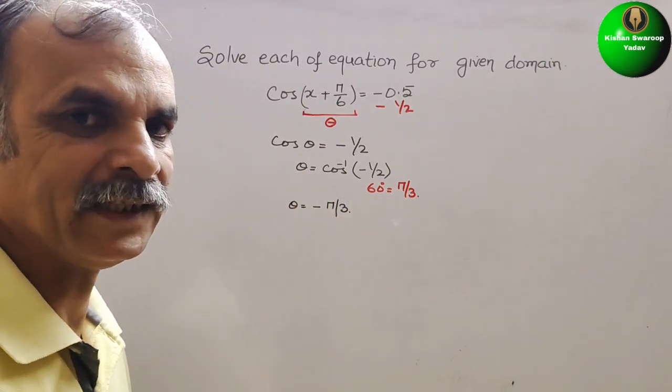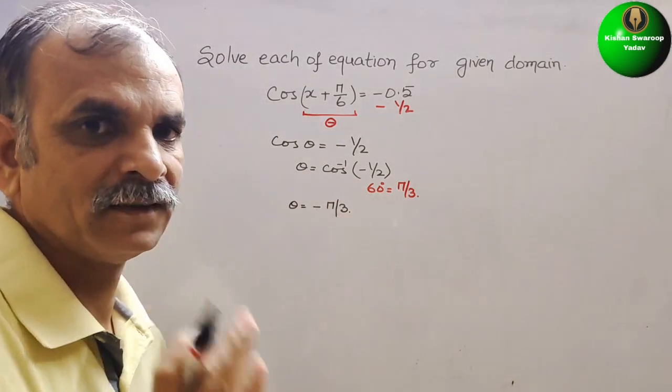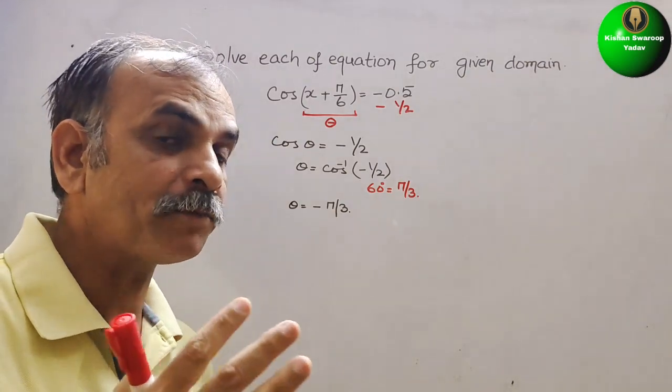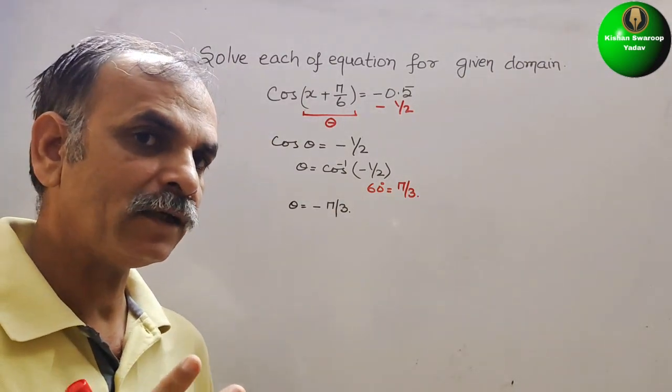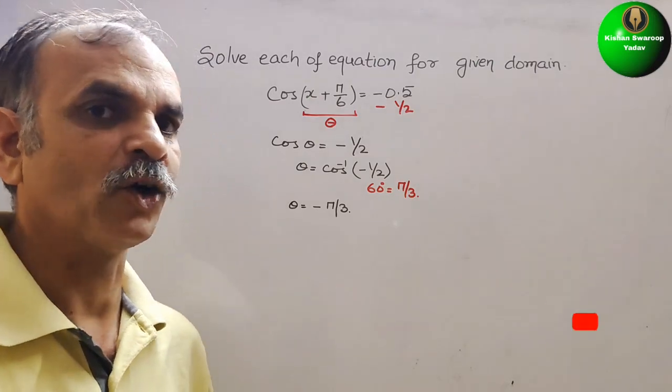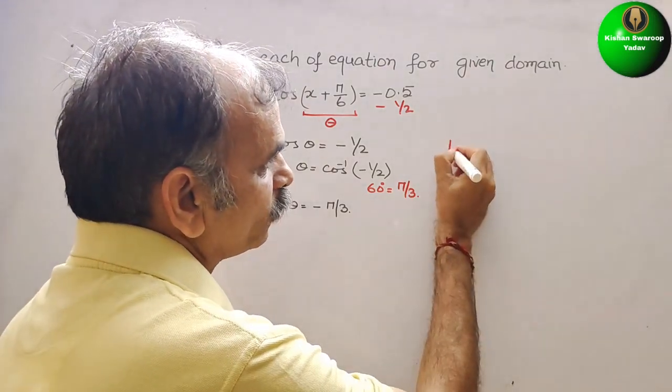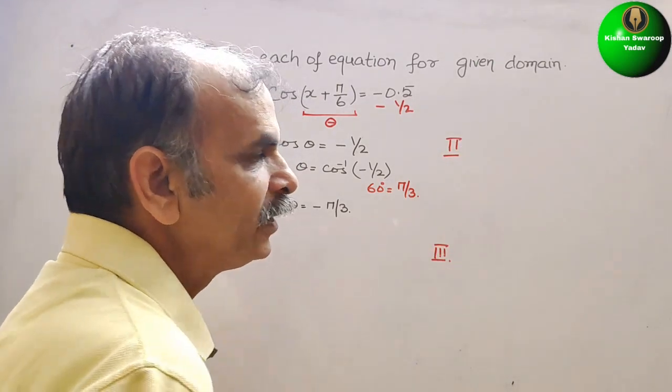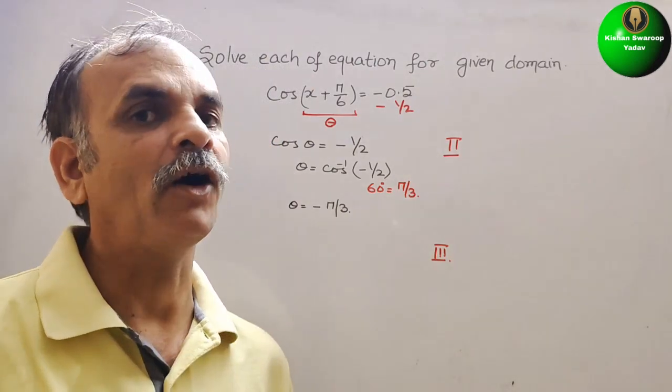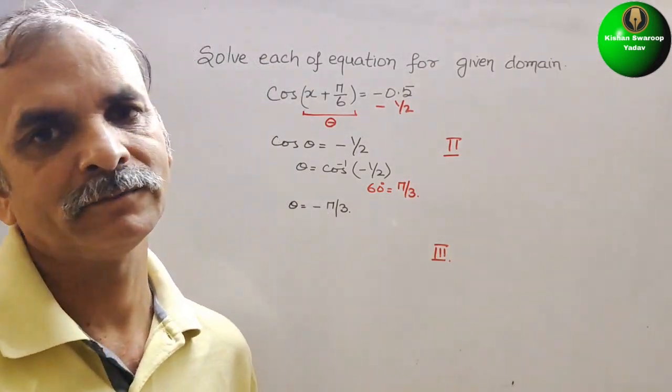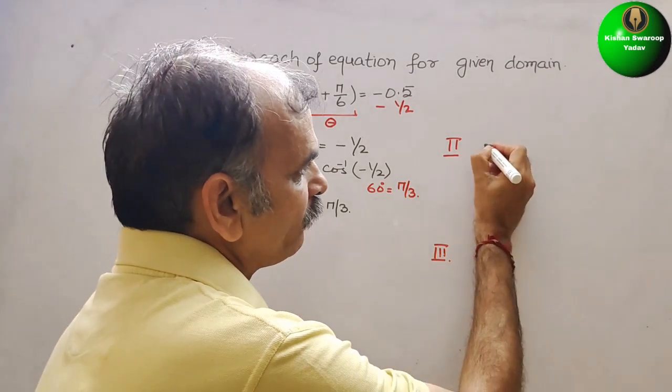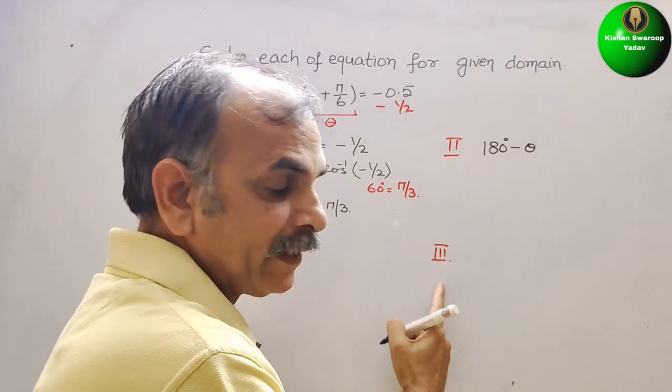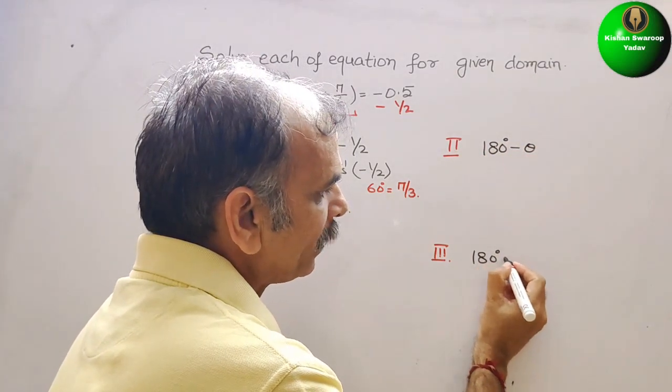Now understand this. Here minus is there. So minus means what? Cos is minus where? It is negative in 2nd and 3rd quadrant. In 2nd quadrant, how we are writing? 180 degrees minus theta. So here we are writing 180 degrees minus theta, and here 180 degrees plus theta.